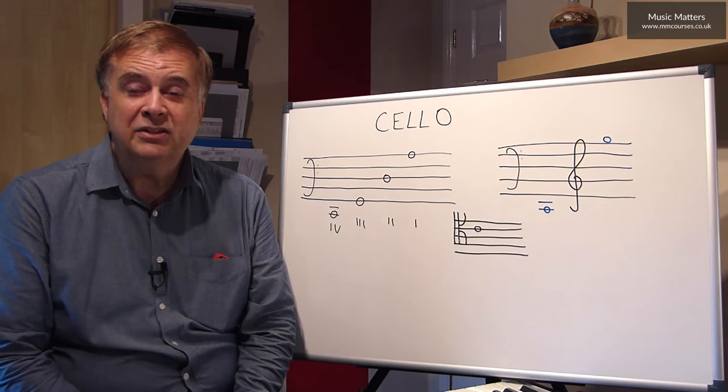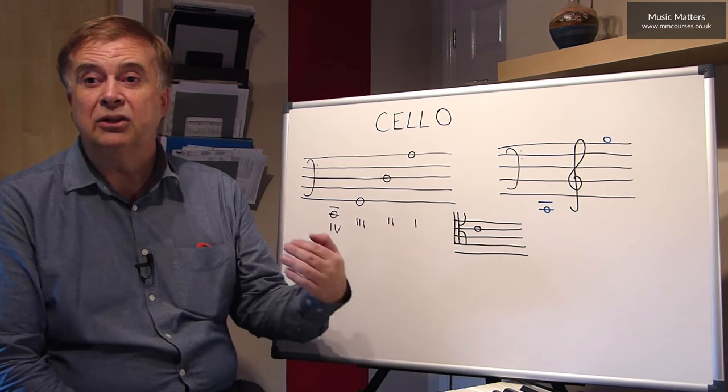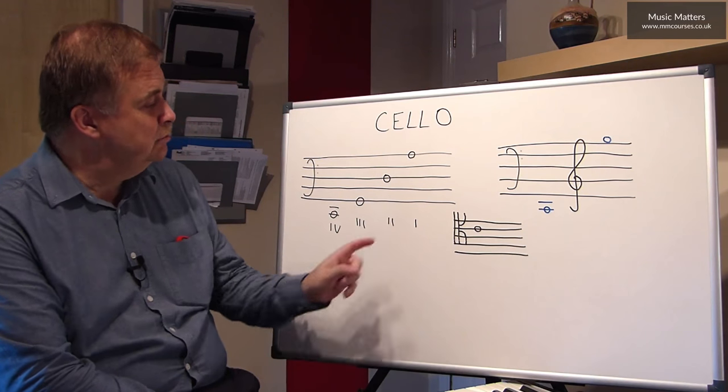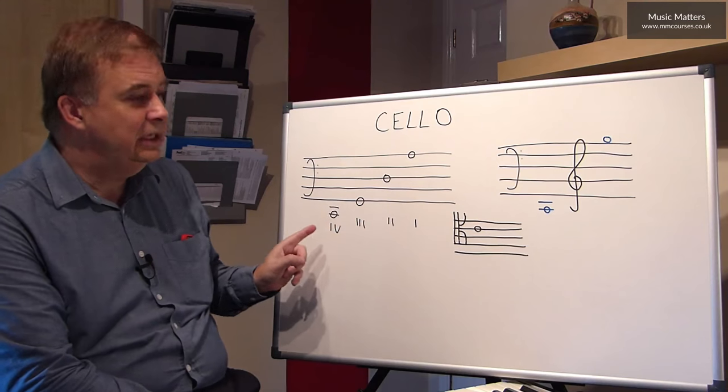The viola is a fifth below the violin, and the cello is an octave below the viola. So those are our four open strings, numbered one, two, three, four.